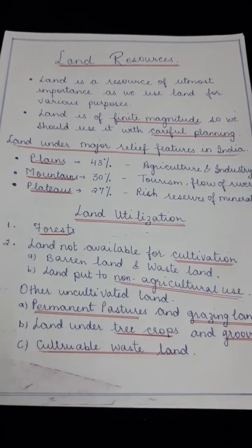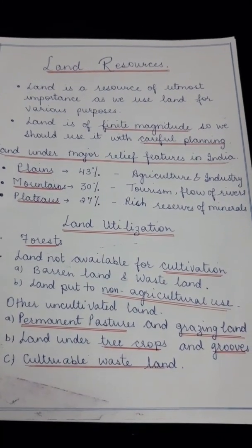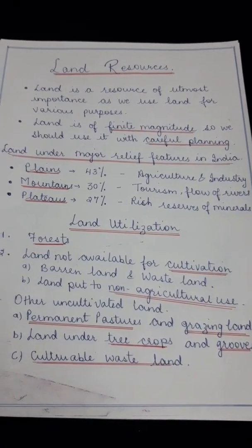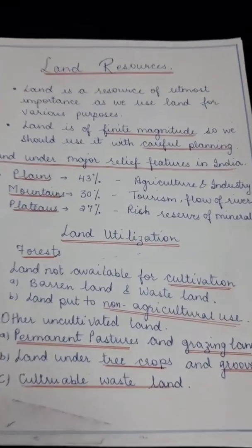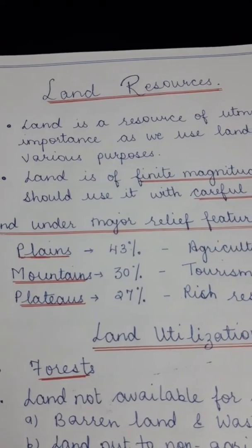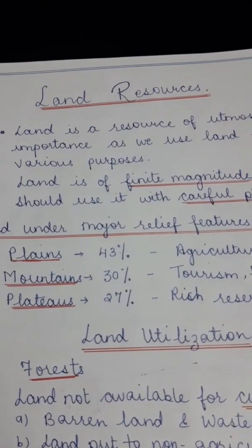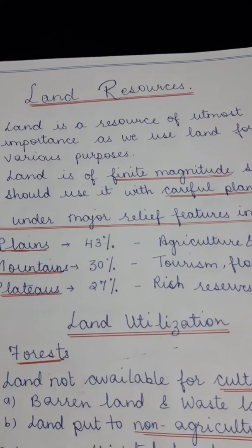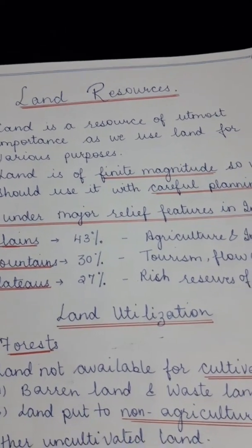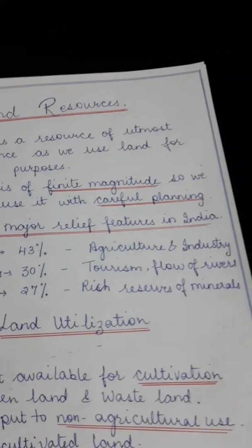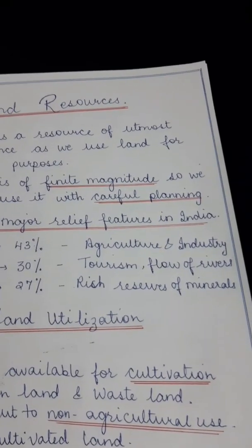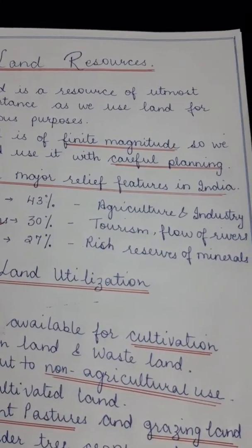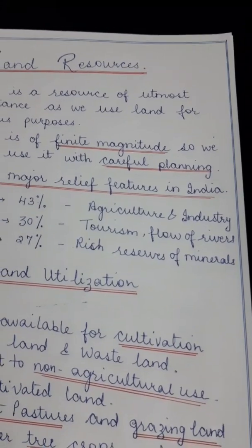Therefore we have to analyze things. Now, land under major relief features — in India there are three major relief features: the plains, mountains, and plateaus. Plains occupy 43% of the total geographical area of India. Agriculture is done in the plain area as it is very fertile, and industries are also found in large numbers there.